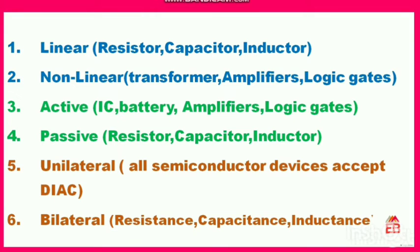Before going to the MCQs, we need to know some basic definitions. So what is a linear element? A linear element is one in which there is a proportional change in current and voltage — as the voltage varies proportionally, the current also varies. Examples of linear elements are the resistor, capacitor, and inductor.